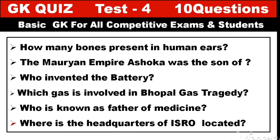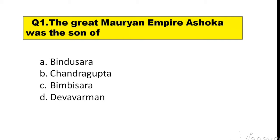Question number 1. The great Mauryan Emperor Ashoka was the son of... The options are: A. Bindu Sara, B. Chandragupta, C. Bimbisara, D. Devavarman.